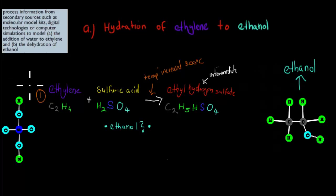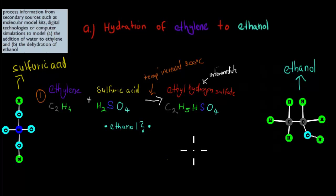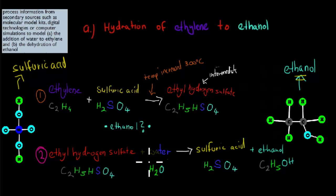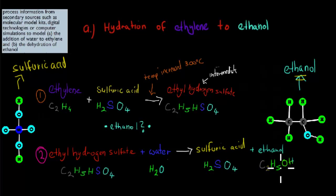In that second step we got what we wanted — ethanol — produced in two steps. The second step was ethyl hydrogen sulfate, a big molecule, bumping into a water molecule H₂O. When that happened, two new products were formed: sulfuric acid H₂SO₄, and ethanol C₂H₅OH.